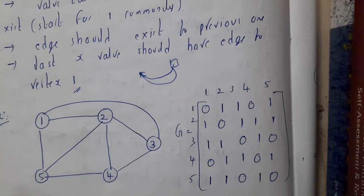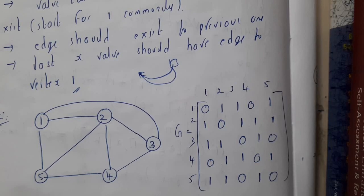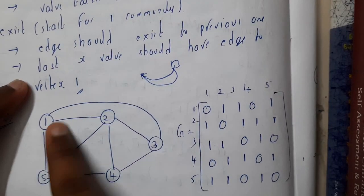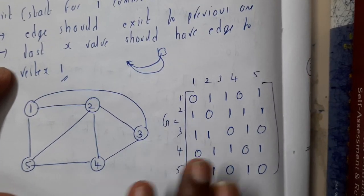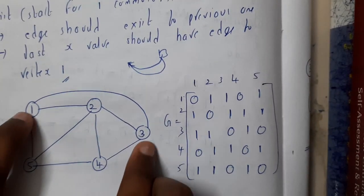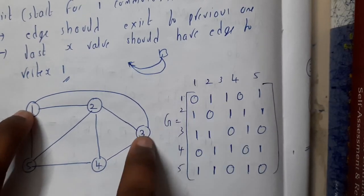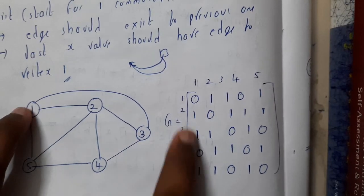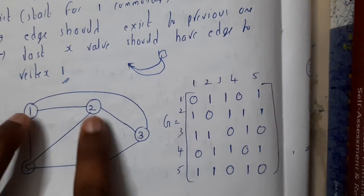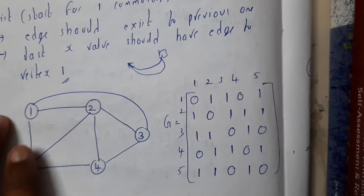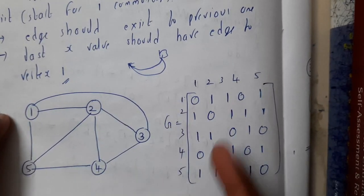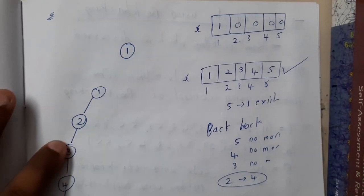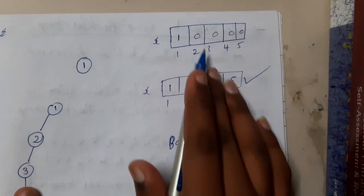Let us take a small problem and draw the state space tree for a clear idea of how we are going to proceed. First, just convert the problem into a graph. If there is an edge between 1 and 3, mark it as 1. Since this is an undirected graph, it goes both ways: 3 to 1 as well. If an edge doesn't exist, like 1 to 4, mark it as 0. Fill the entire matrix this way.